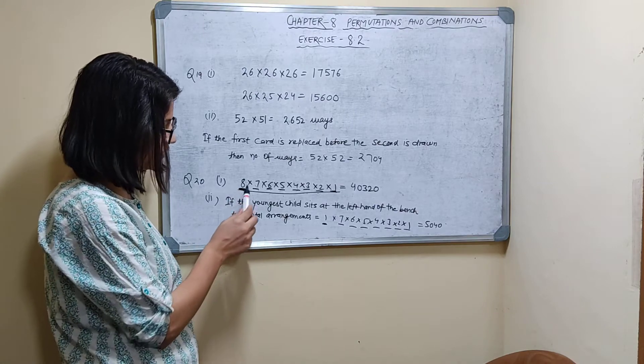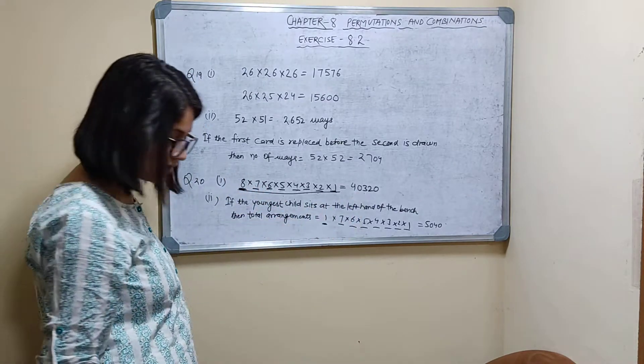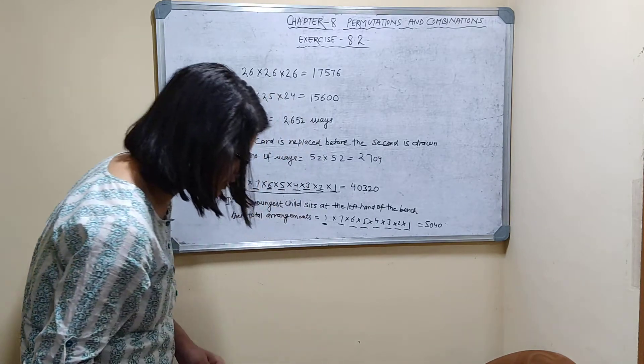This seat can be filled by eight ways. From any eight students, anyone can come here. And seven choices are like this. 40,320 ways the children can be seated.